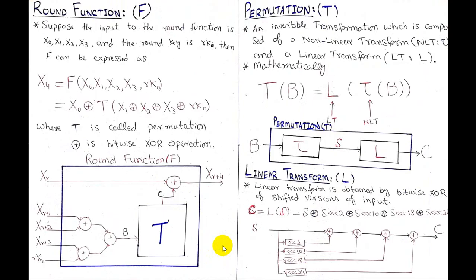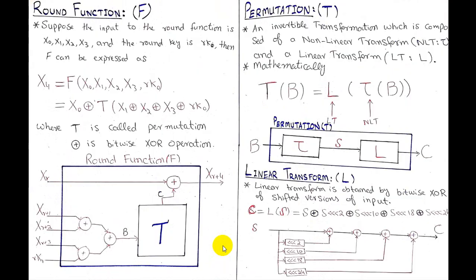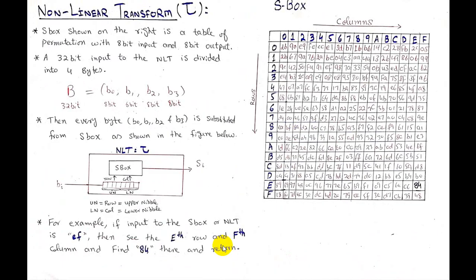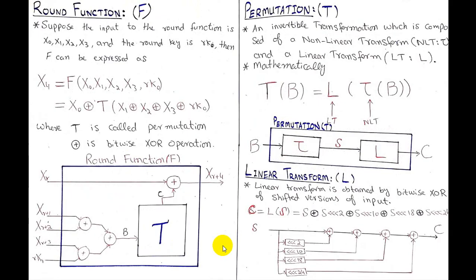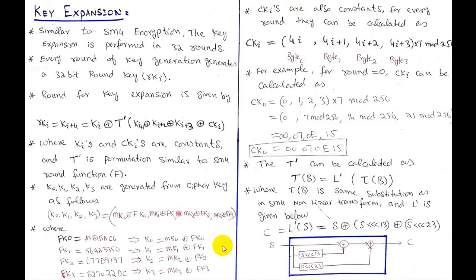Now you should be clear on what encryption and decryption are in SM4 block cipher, how inputs and outputs are generated for plaintext and cipher text, what the round function is, what permutation is, what linear transformation is, and what non-linear transformation is. Now it is time to move to the key expansion methodology, which is based on these same transformations.